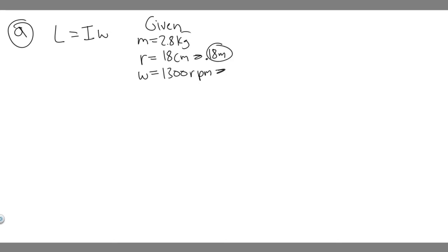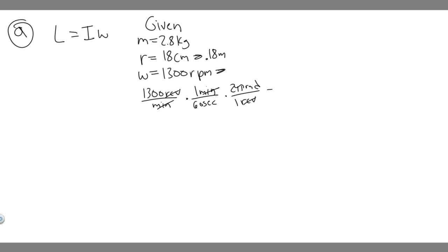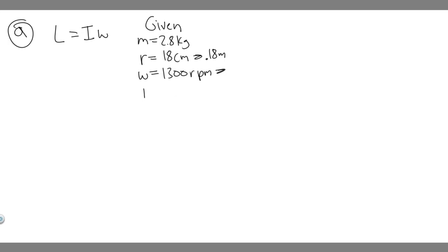We need to make sure the radius is in meters, mass in kilograms, and angular velocity in radians per second. So let's convert 1300 revolutions per minute. We multiply by 1 minute over 60 seconds to cancel minutes, and then by 2π radians per revolution to cancel revolutions. So we do 1300 divided by 60, then multiply by 2π, which gives us 136.136 radians per second.